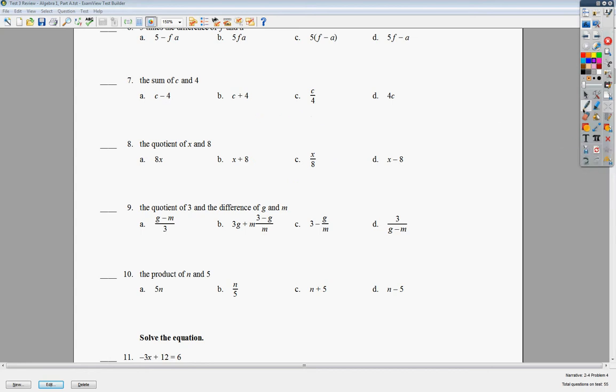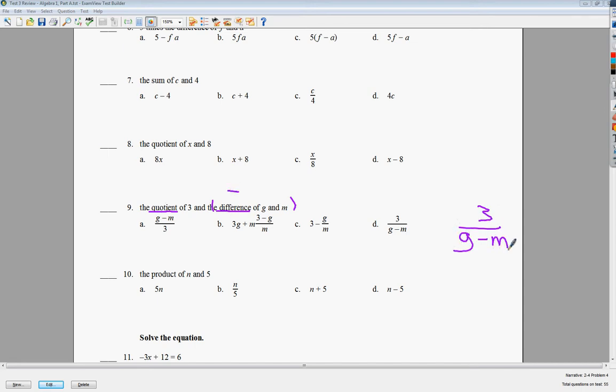Number 9 is another one of those double math words thing. It says the quotient of 3 and the difference. If it said the quotient of 3 and variable or some number or whatever, you would have 3 over something else, and then probably adding to M or whatever. But it says the quotient of 3 and the difference of G and M. So, when you have the quotient and you have a number and then and, it means 3 goes on top. The difference you have to know is a minus word, and you just put G minus M on the bottom. Always make sure that if it says the quotient of, you have the number that it says directly right after that on top.